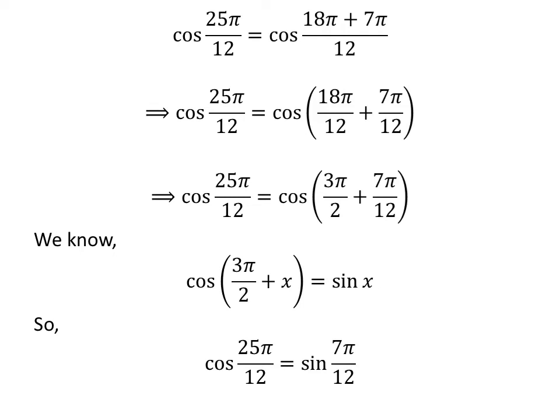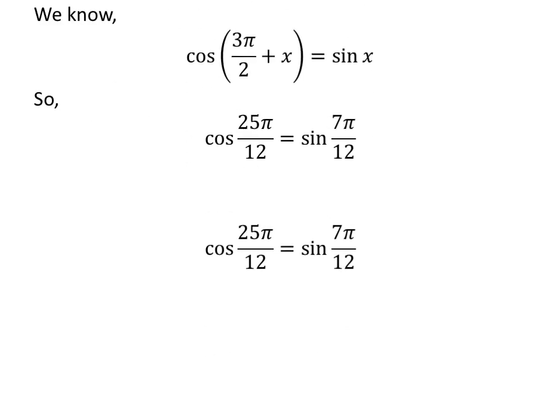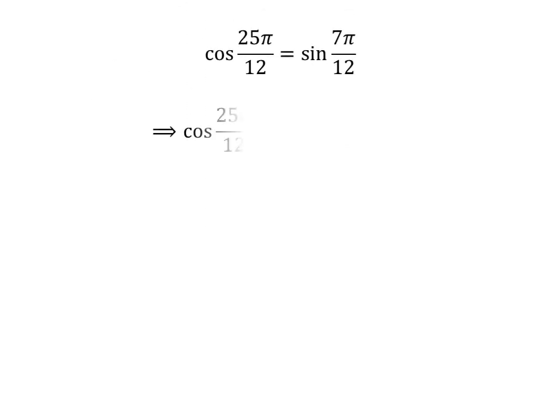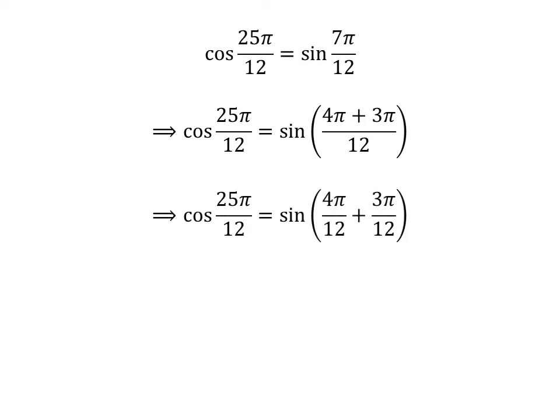So, cosine of 25 times pi upon 12 is equal to sine of 7 times pi upon 12, which equals sine of 5 times pi upon 12, which equals sine of pi upon 3 plus pi upon 4.